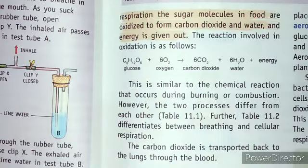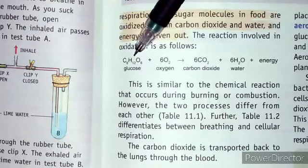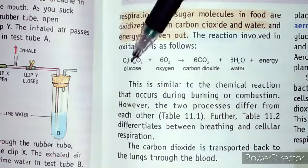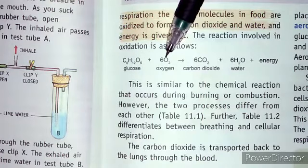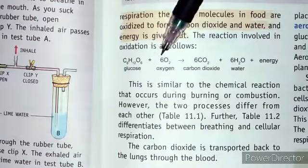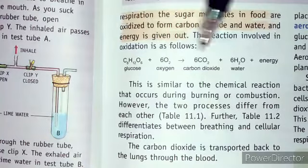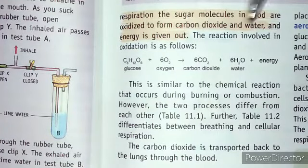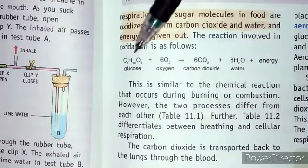Let's see how this process occurs. First of all, we have glucose present in our blood, and this glucose reacts with oxygen which we take from the environment. The glucose gets oxidized and then releases carbon dioxide, water, and some energy.